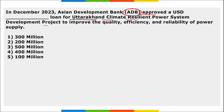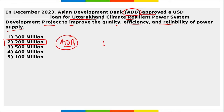Next: in December, the Asian Development Bank approved how much loan for the Uttarakhand Climate Resilient Power System Development Project to improve the quality, efficiency, and reliability of power supply? It is 200 million dollars, approved by ADB for Uttarakhand's climate resilient power system development project.